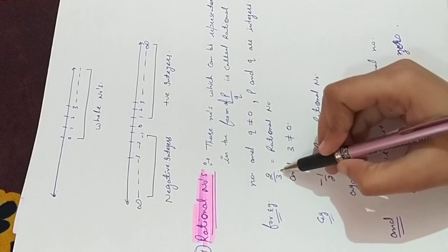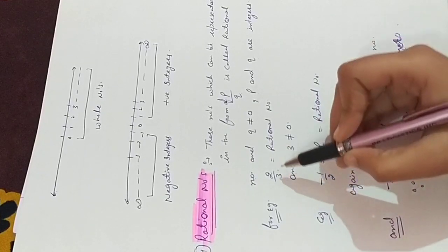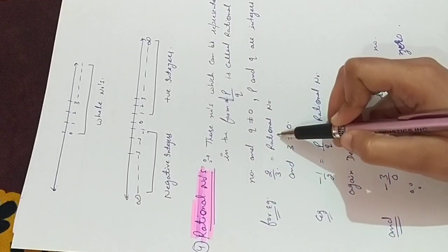For example, 2 by 3. Now, 2 by 3 is a rational number and you are observing 3 is not equals to 0. Then this is a rational number.